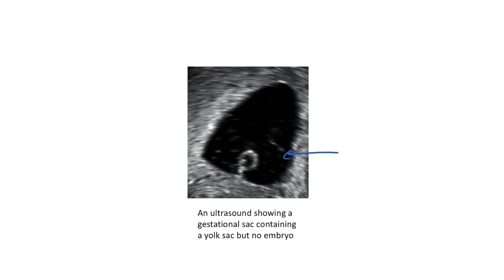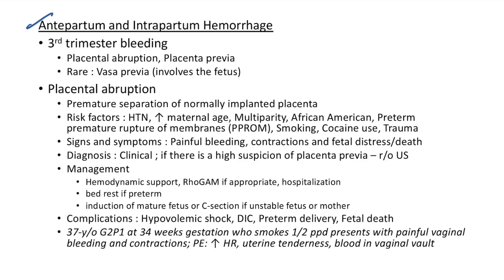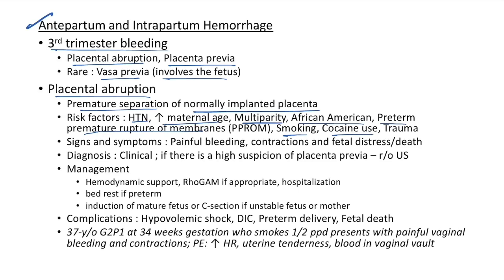Differential diagnosis of third-trimester bleeding: placental abruption, placenta previa, and rarely vasa previa (where the fetus is involved). Placental abruption is premature separation of the normally implanted placenta. Risk factors include hypertension, increased maternal age, multiparity, African-American ethnicity, preterm premature rupture of membranes, smoking, cocaine use, and trauma. Signs and symptoms: painful bleeding, contractions, and fetal distress or death.